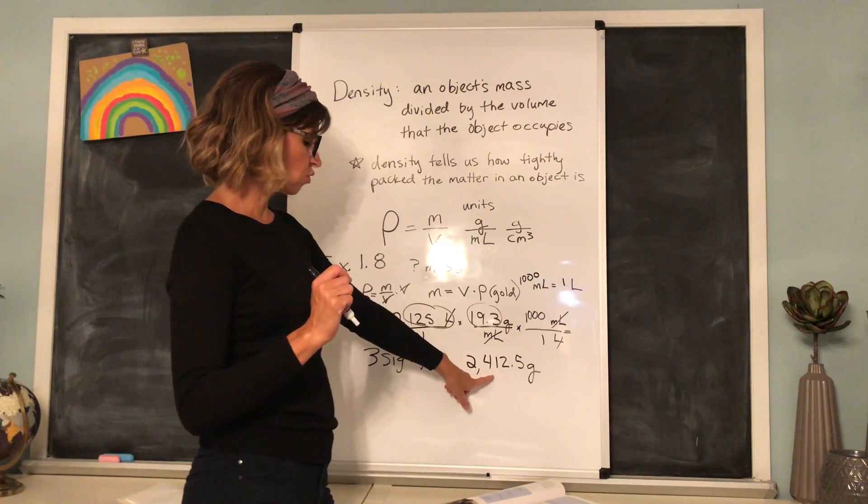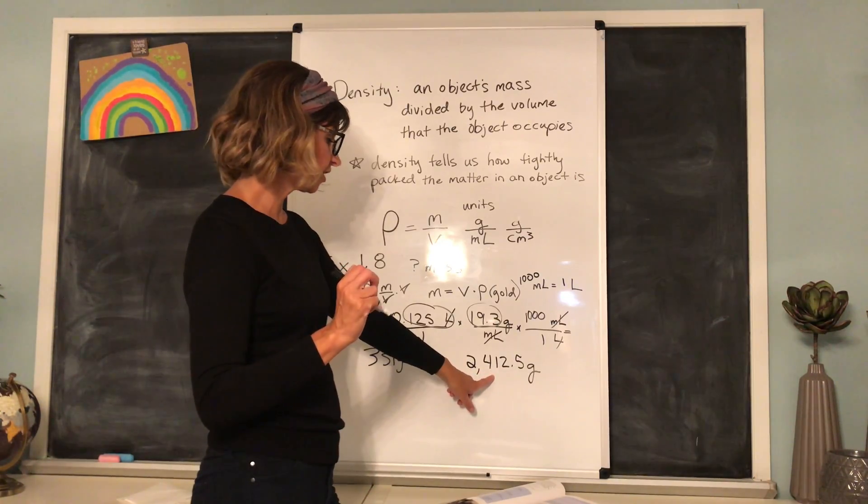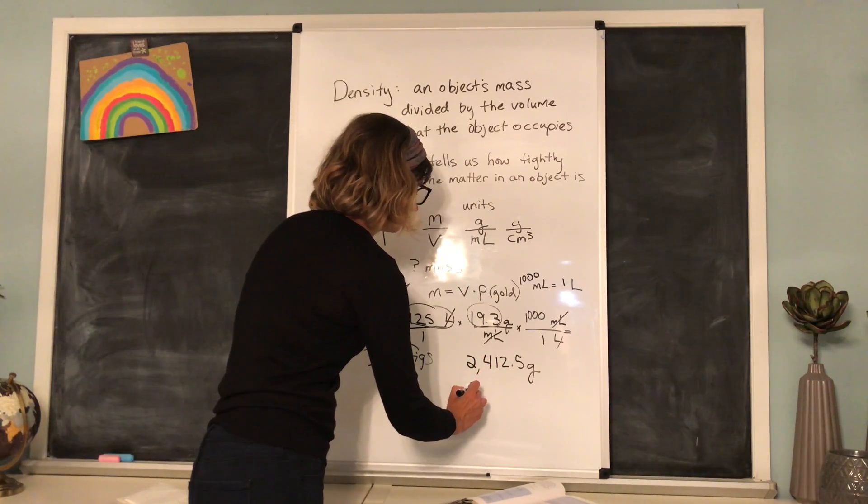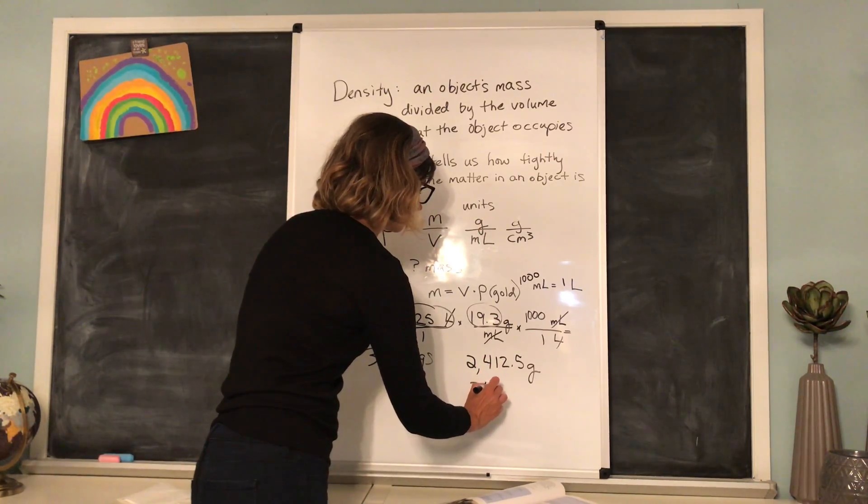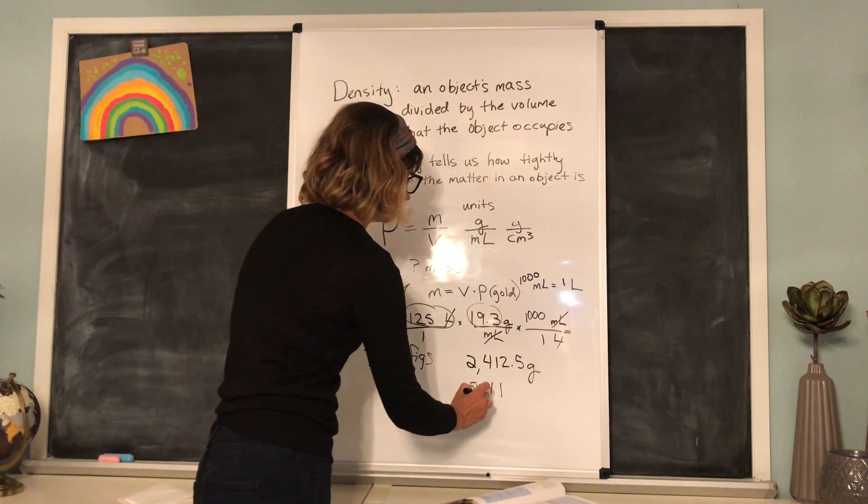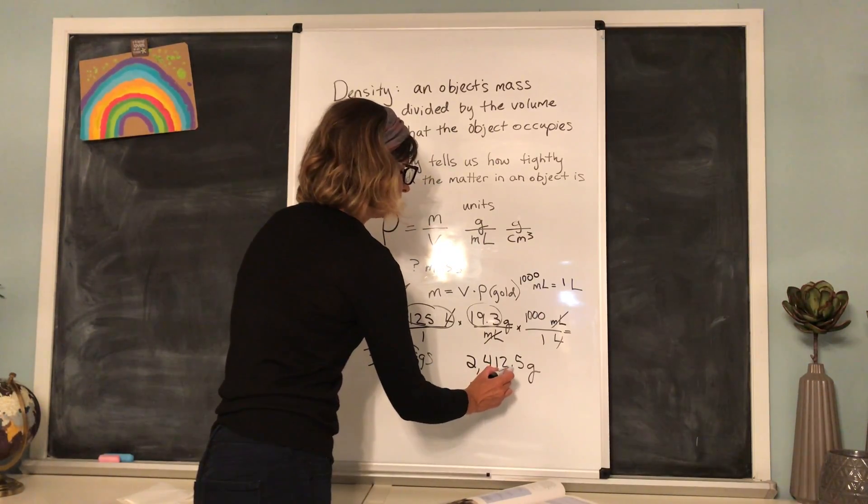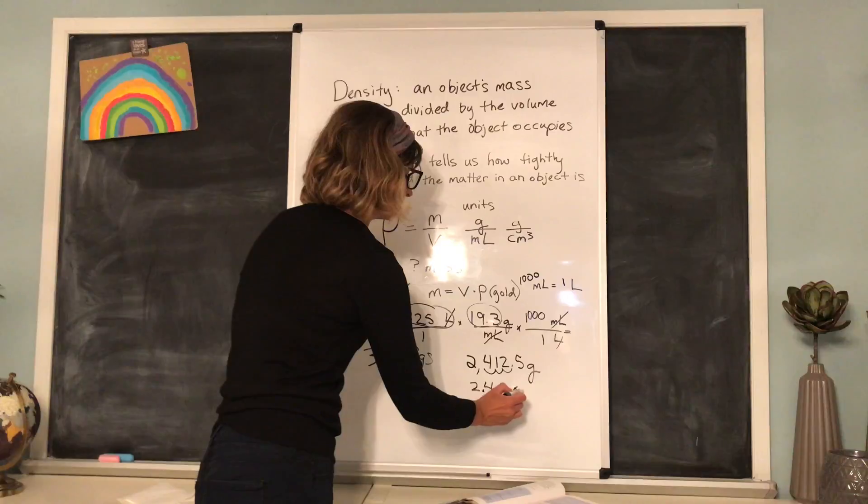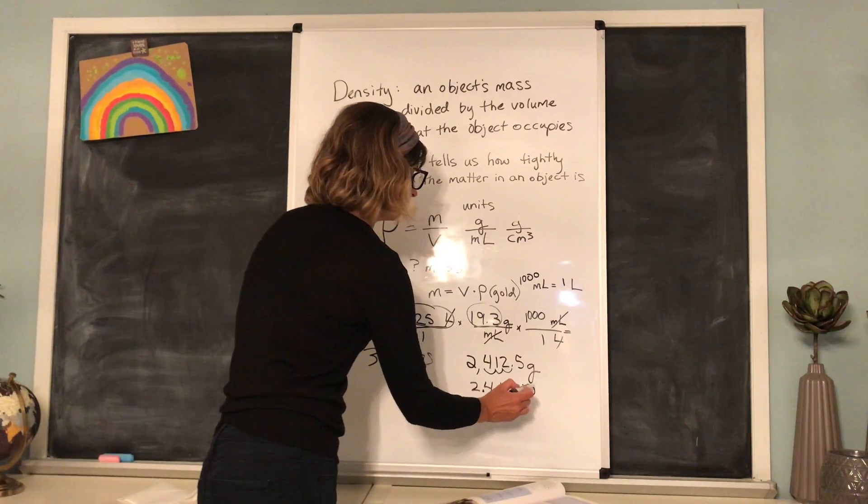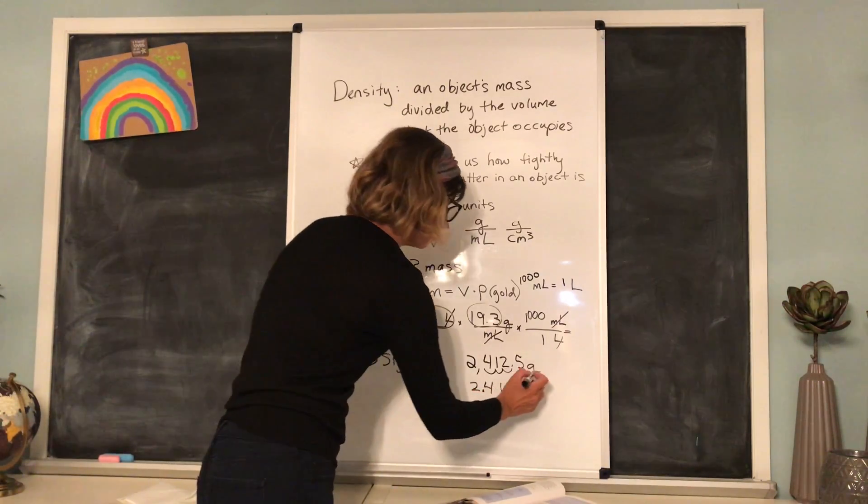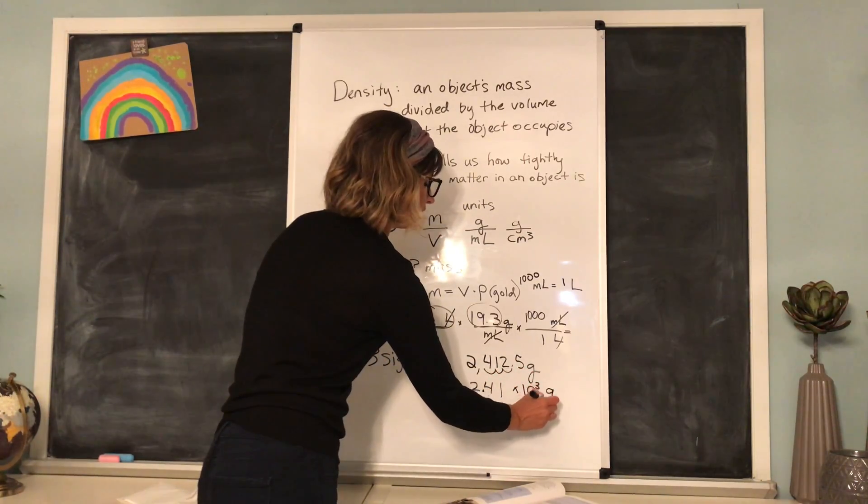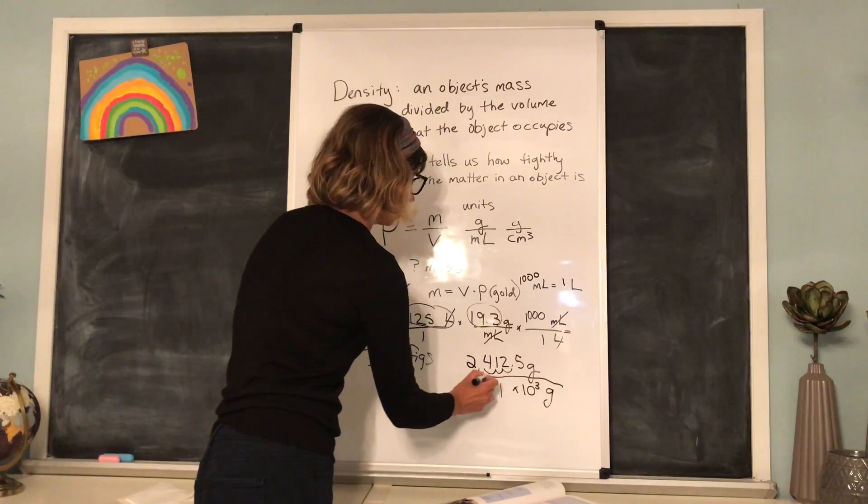So how do we change this into only 3 significant figures? Well, we're going to have to move our decimal place over, aren't we? Because we can only fit 3 digits. So the decimal place must go here, which means we have to move the decimal place 1, 2, 3 times, which means here we say 2.41 times 10 to the 3rd, because we moved it 3 times, grams. And there is our answer.